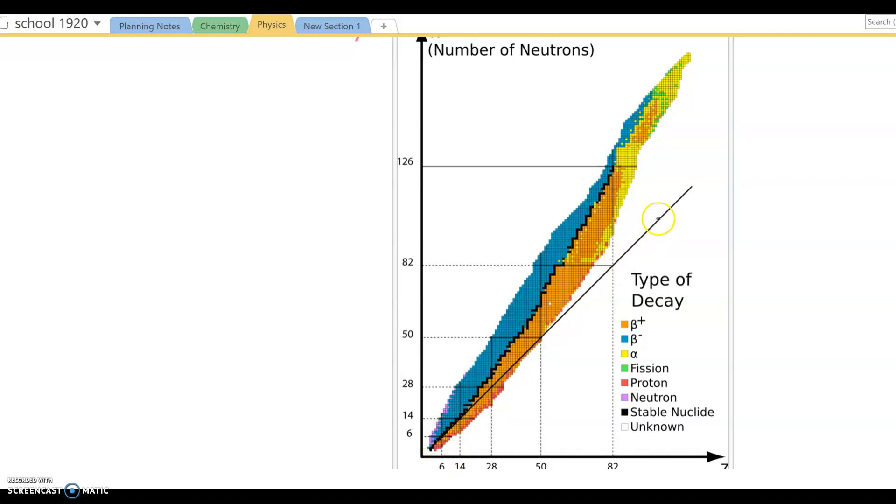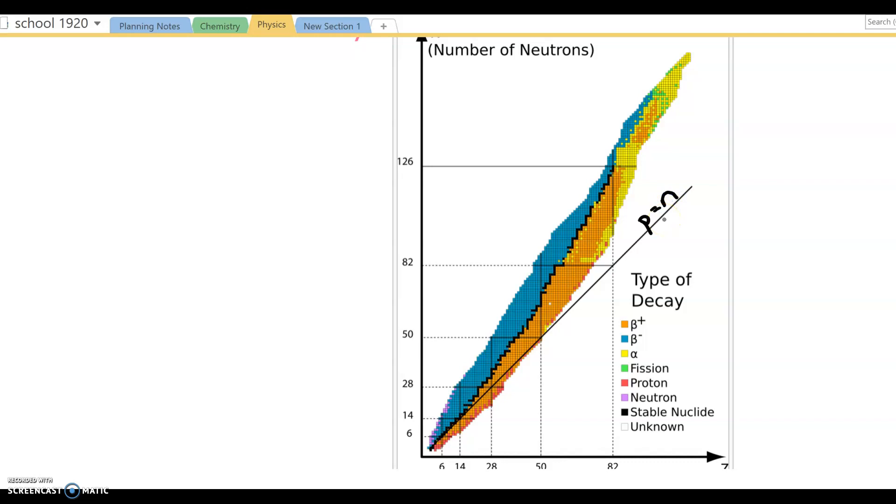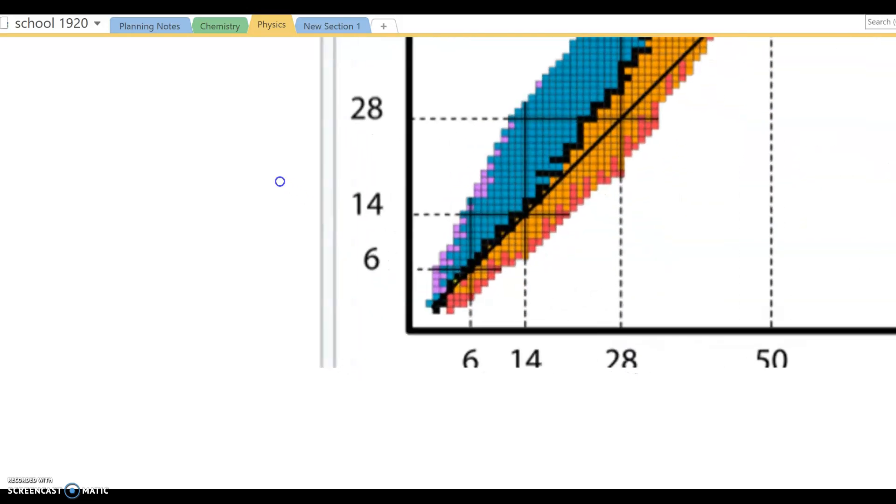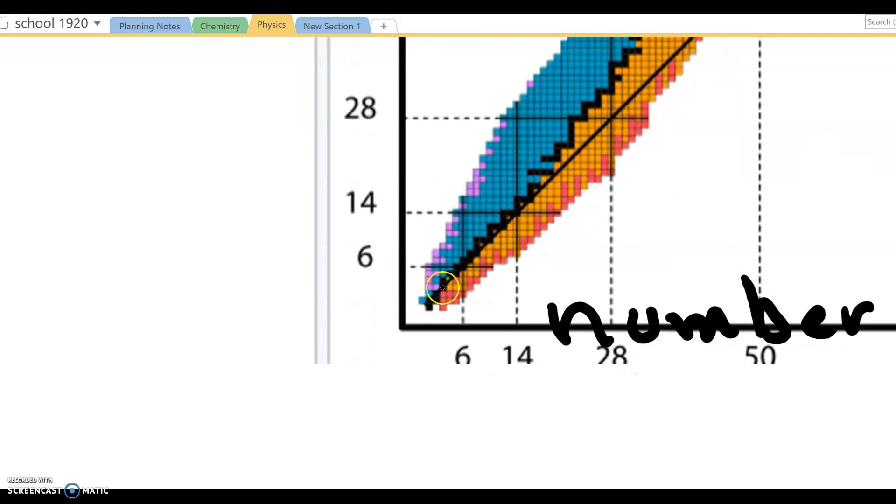This single black line is showing where the proton and the neutrons have the same amount. This stays right along. Stable isotopes follow that along until we get to carbon at number six. Then we can tell that the black line of stability zigzagging right here is shifted to the side where we have more neutrons than protons.